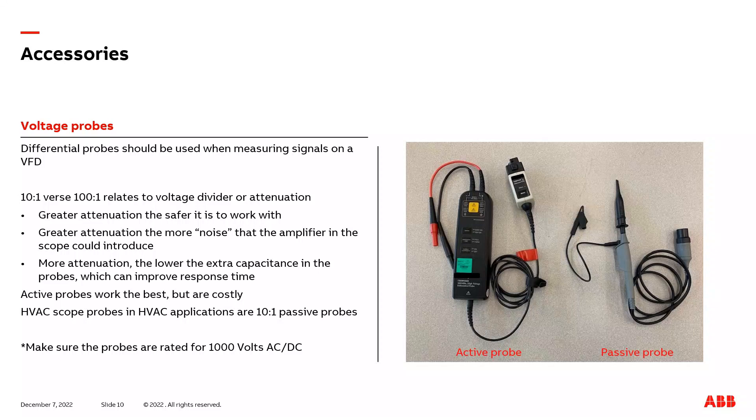One of the big differences you also notice when looking at two styles of voltage probes is active probes are much more expensive compared to passive probes. Whatever type of voltage probe you do select and want to use, make sure it's rated for up to 1,000 volts AC or DC, as you could be measuring signals, for example, on the DC bus that are 850 volts or even higher. So you want to make sure the voltage probe is safe to work with at these high voltages.